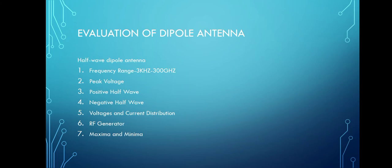The next topic is the evolution of the dipole antenna. There are two types of main dipole antennas: the half-wave dipole antenna and the full-wave dipole antenna. The half-wave dipole antenna is one where the total length of wire used as a dipole equals half the wavelength.